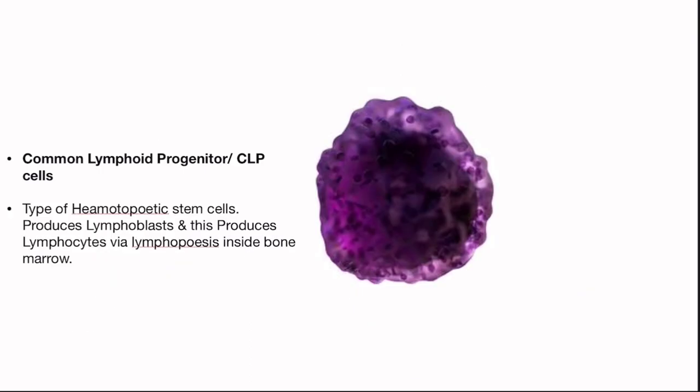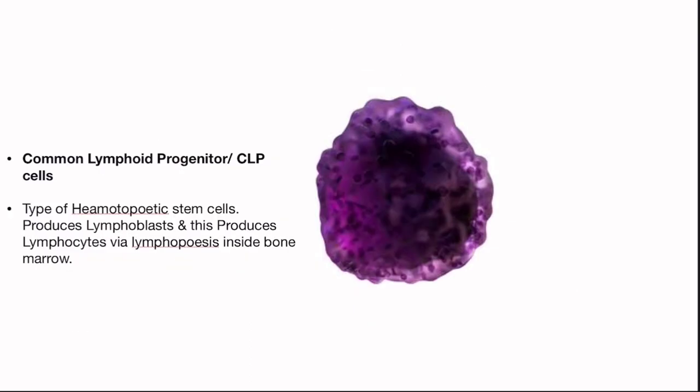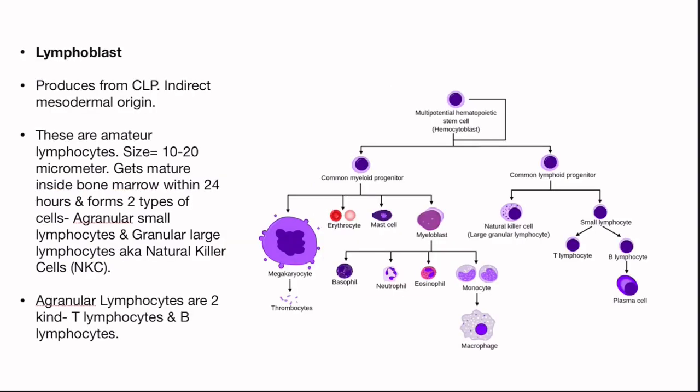The remaining topic is common lymphoid progenitors. As you can see in this photo, this is a common lymphoid progenitor, or CLP. These are also a type of hematopoietic stem cell. Hematopoietic stem cells are of two types: common myeloid progenitor (CMP) and common lymphoid progenitor (CLP). This CLP produces lymphoblasts, which then produce lymphocytes via lymphopoiesis inside the bone marrow.